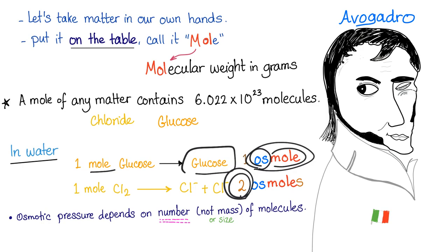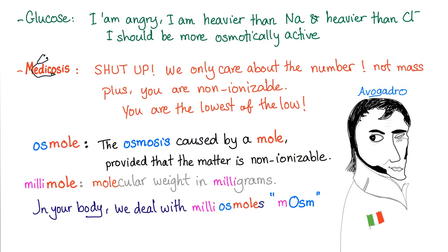The moral of the story is, Signore Avogadro is a very nice guy. So glucose is telling you, I'm angry. I'm heavier than sodium and heavier than chloride. I should be more osmotically active. We tell him, shut up. We only care about the number, not the mass. Plus, you're not ionizable. You are the lowest of the low. So osmoles, osmosis caused by a mole, provided that the matter is non-ionizable. Millimole, same thing. Molecular weight in milligrams. What about a mole? Molecular weight in grams. In your body, we only deal with milliosmoles. That's why the normal plasma osmolality is 290 milliosmoles per liter.